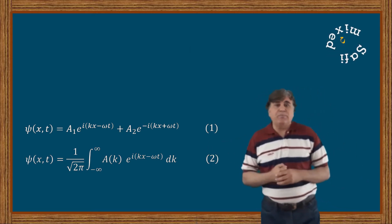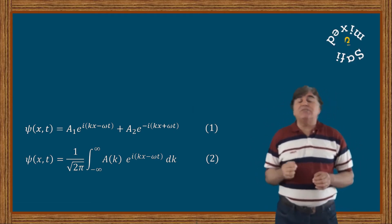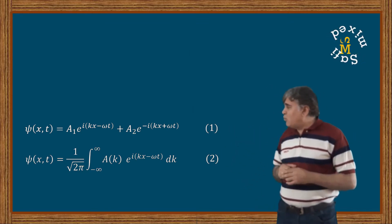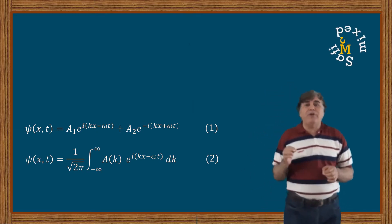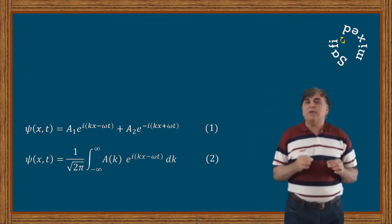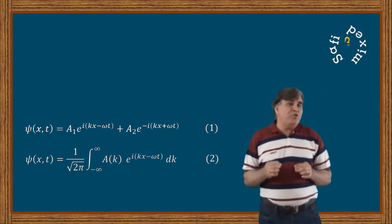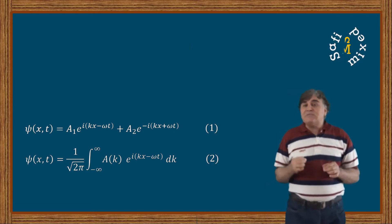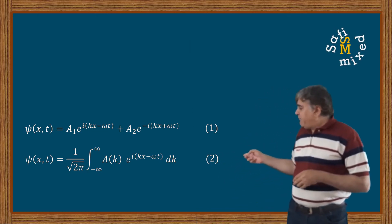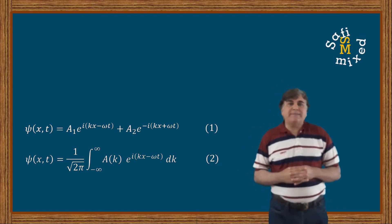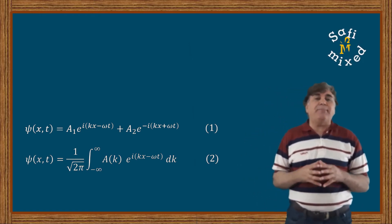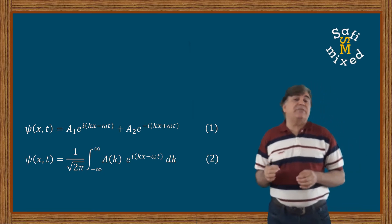All three issues will be resolved if we use the wave function of equation 2. This wave function correctly satisfies the Schrödinger wave equation. It is different from equation 1 in that it is a linear combination of a very large number of plane waves with a continuous spread in wave number k, which results in a continuous energy spectrum as well. The factor 1/√(2π) is added to normalize the wave function.